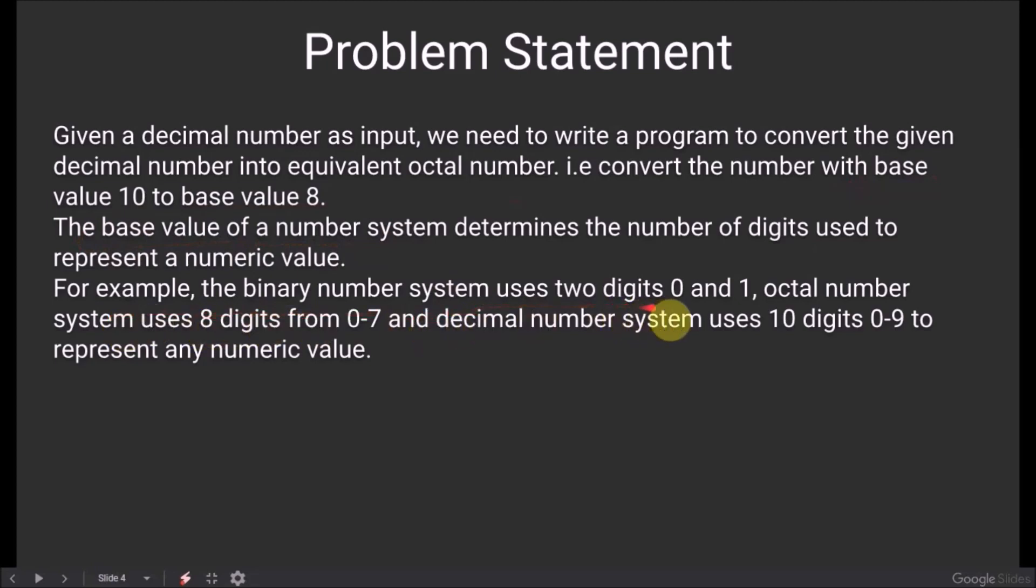the binary number system uses 2 digits, 0 and 1. Octal number system uses 8 digits from 0 to 7, and decimal number system uses 10 digits from 0 to 9 to represent any numeric value.